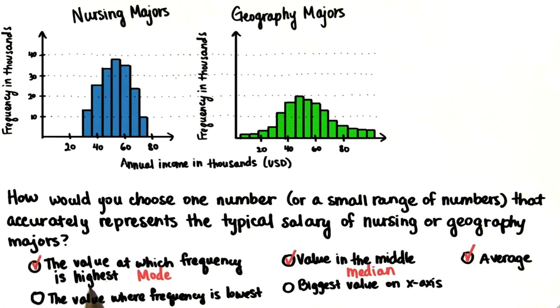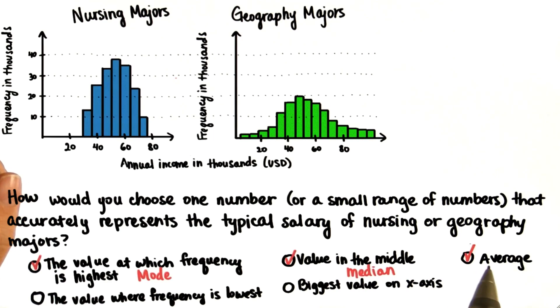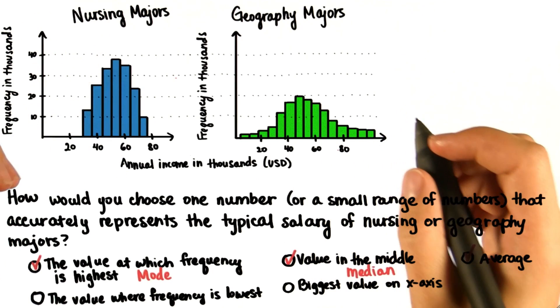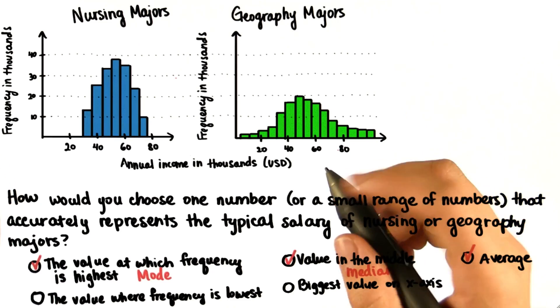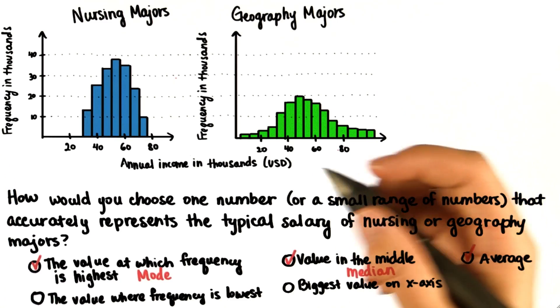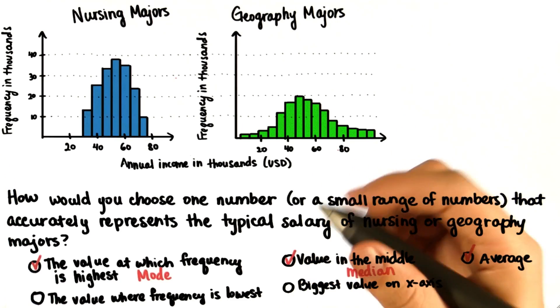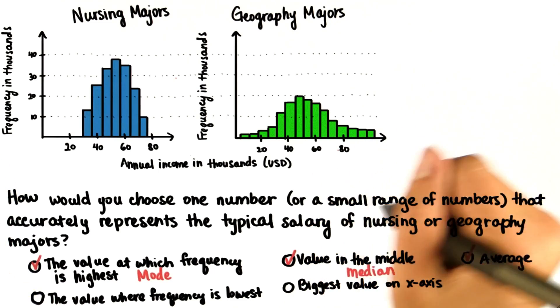So let's ignore these two. But we know that the mode, median, and average can all help describe the distributions. They each have strengths and weaknesses, and we'll explore all of these throughout this lesson.